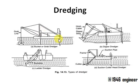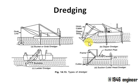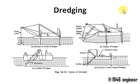Next we have dredging. Dredging helps in maintaining the water level — you can excavate the naturally available bed to increase the depth of water, or excavate at one place and deposit material at another to reduce depth at a specific location. This is done with a special machine called a dredger, and there are different types of dredgers.